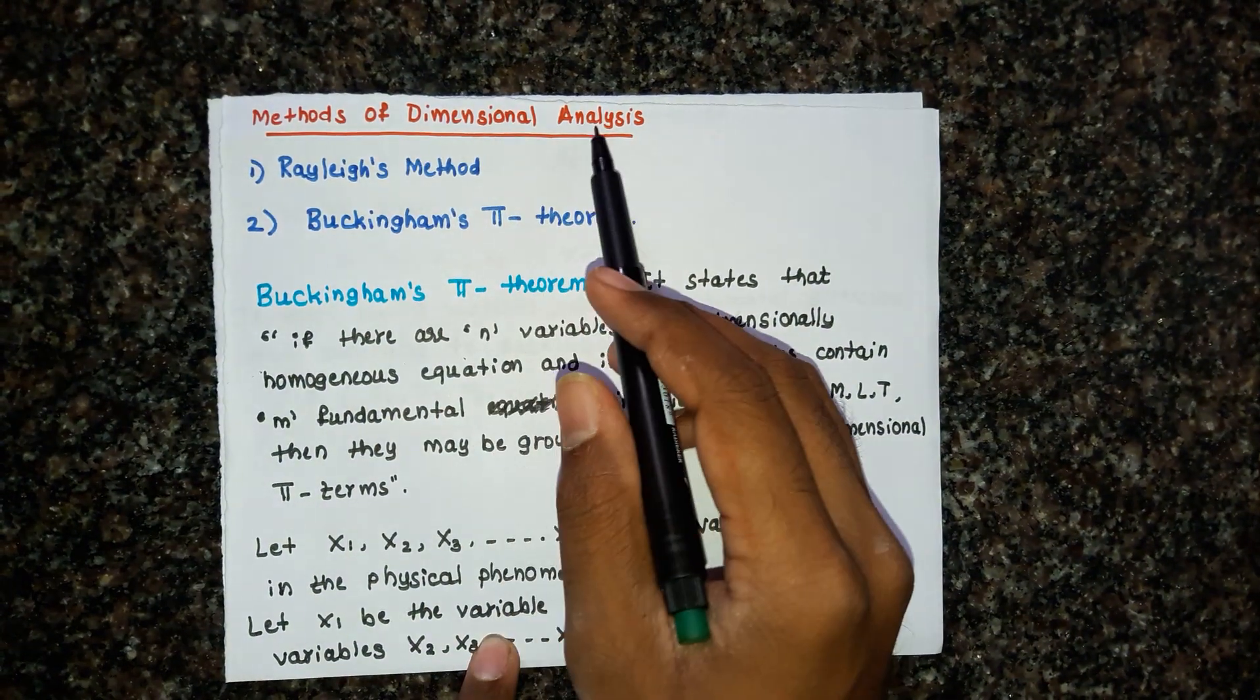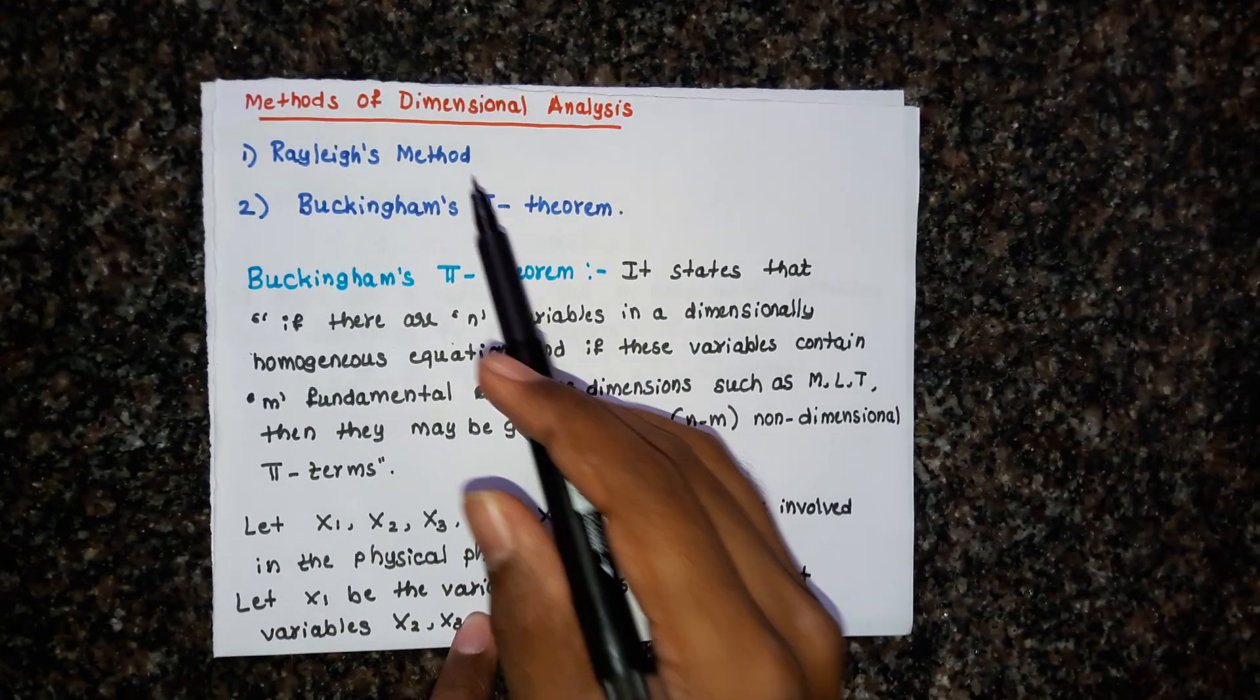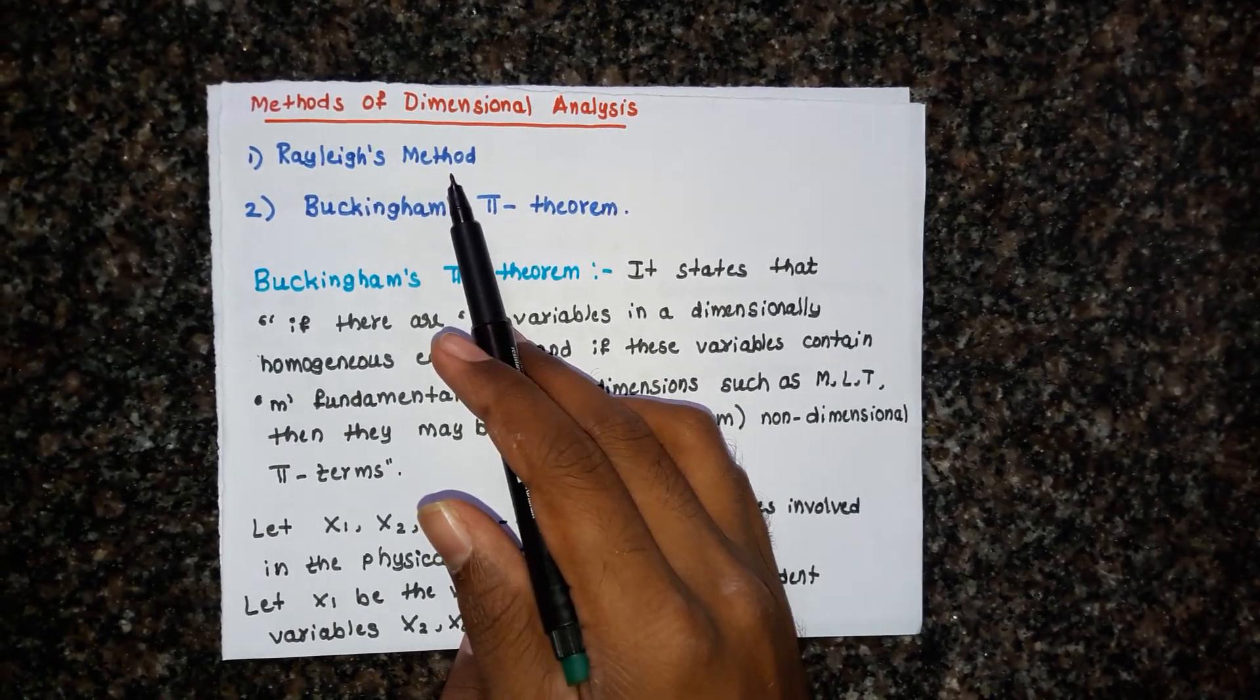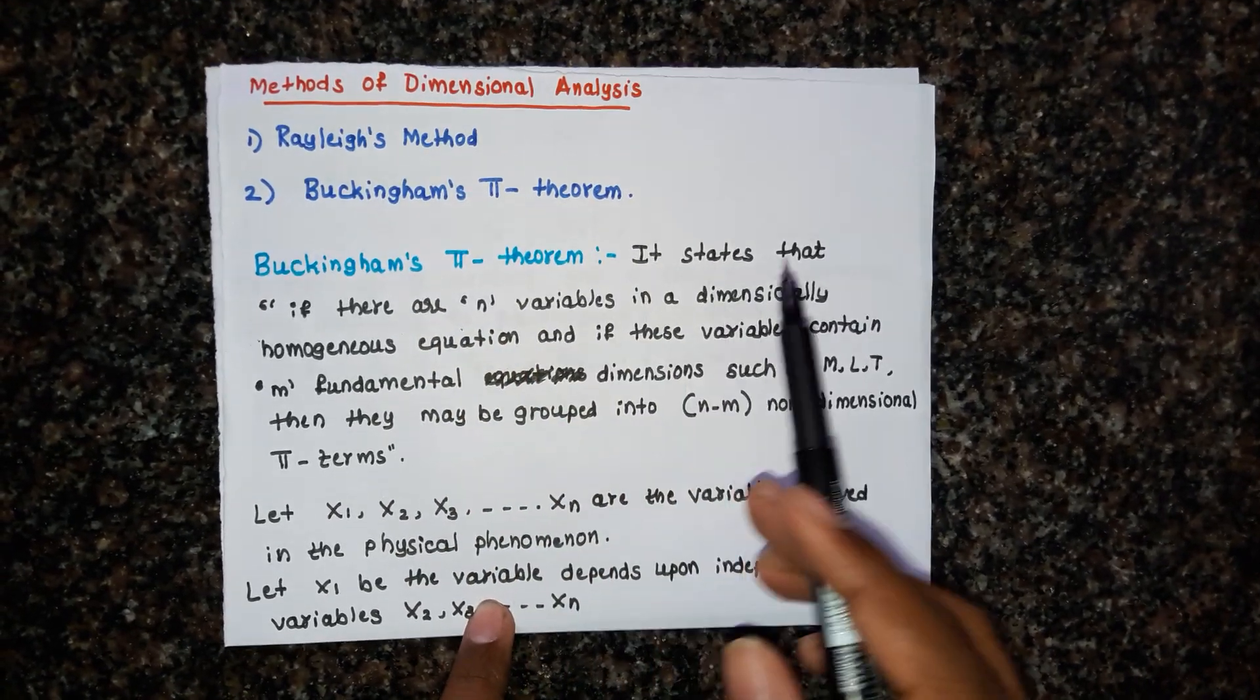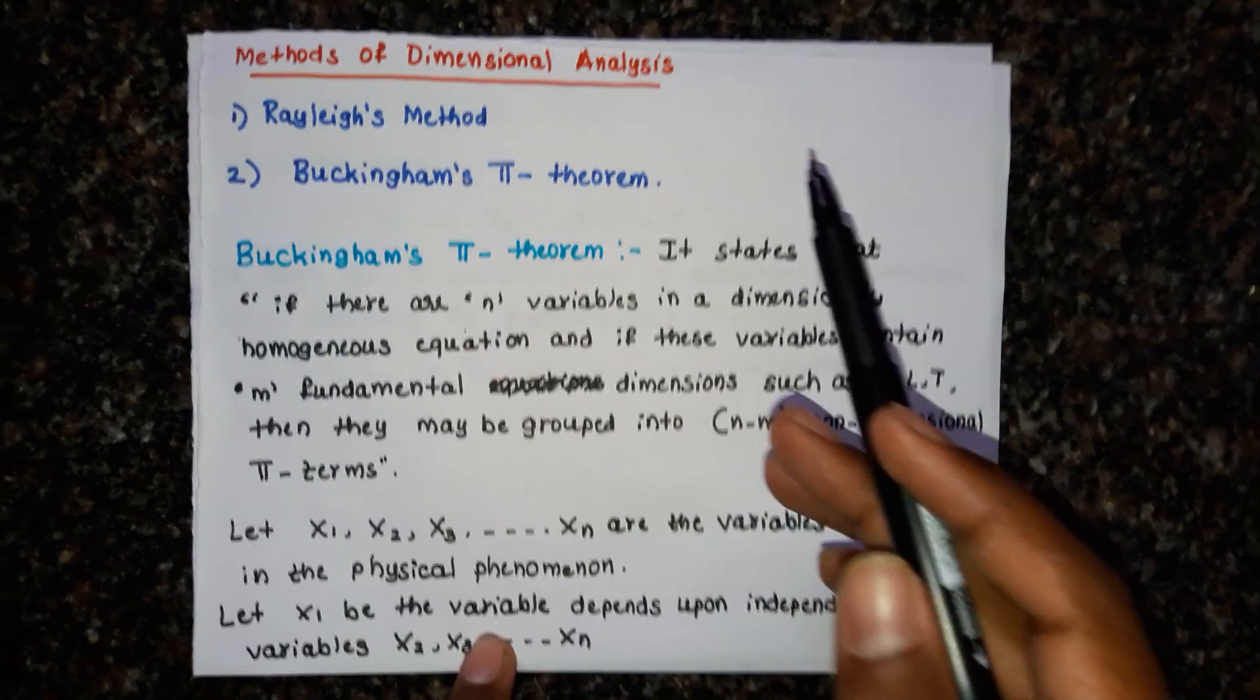Methods of dimensional analysis: There are two methods of dimensional analysis. One is Rayleigh's method, the other is Buckingham Pi theorem. Rayleigh's method is used when the number of variables involved is three.